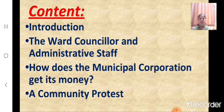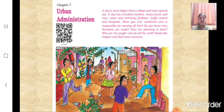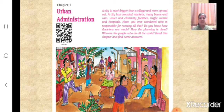This lesson we shall learn with the help of a story of four children. We know that a city is much bigger than a village and more spread out. A city has crowded markets, many buses and cars, water and electricity facilities, traffic control, and hospitals. These services are run by the urban administration; decisions are taken by the urban administrative machinery, and the work is done by officers, officials, and elected representatives of the civic body.